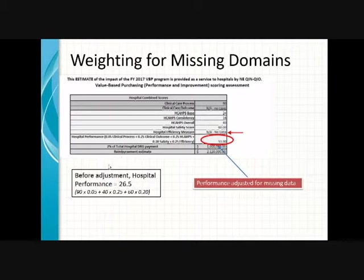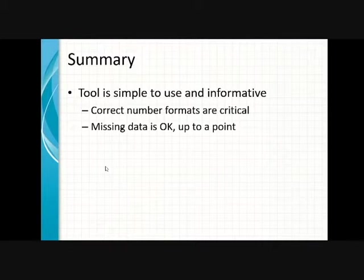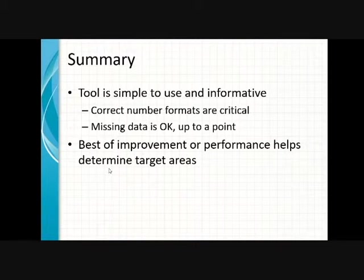So there you have it. The tool is simple to use and informative. The numbers you get are a good approximation of the direction and magnitude of your performance scores. Remember, when filling out tables, correct number formats are critical to getting you a valid score. Because of domain reweighting, missing data is okay, up to a point. You can use the tool to help you understand how changes in scores will impact changes in reimbursement.